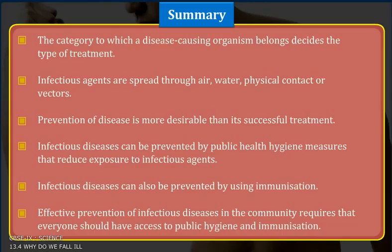Summary: The category to which a disease-causing organism belongs decides the type of treatment. Infectious agents are spread through air, water, physical contact, or vectors. Prevention of disease is more desirable than its successful treatment. Infectious diseases can be prevented by public health hygiene measures that reduce exposure to infectious agents, and also by using immunization. Effective prevention requires that everyone should have access to public hygiene and immunization.